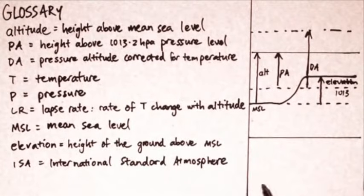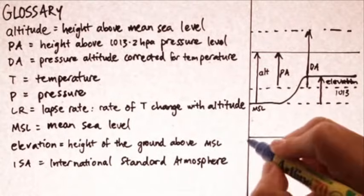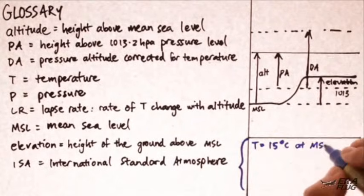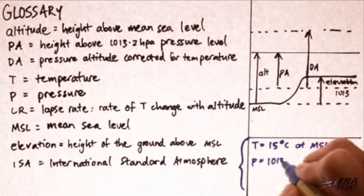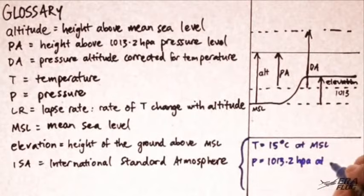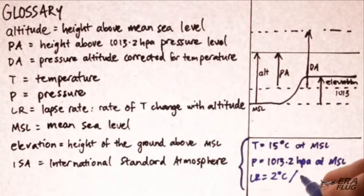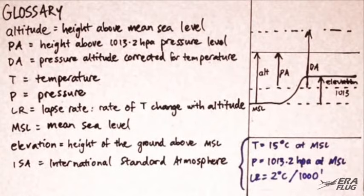The ISA temperature at sea level is 15 degrees C. The pressure is 1013.2 hectopascals. And the lapse rate is 2 degrees C per 1,000 feet altitude.